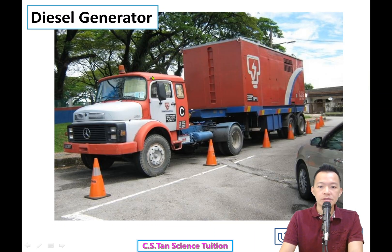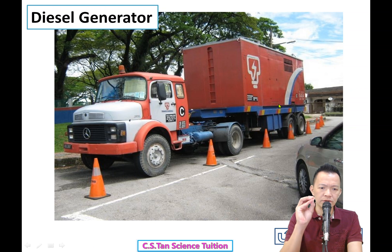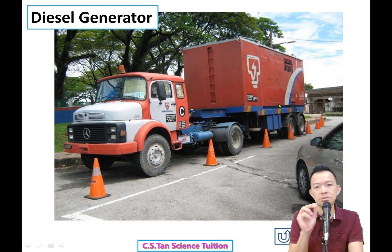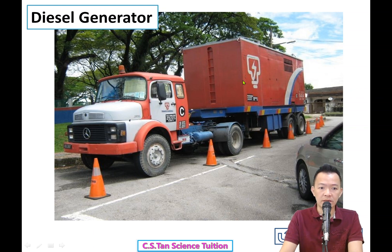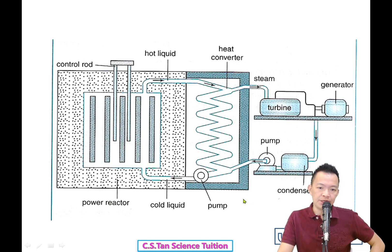When there is a power cut 你的家没有电, TNB uses a diesel generator truck. They park the truck beside the road - 停在路边静静 - it makes some noise but can supply energy to the whole area. You can even run your air conditioner on it. This is the diesel generator 才有的发电器.